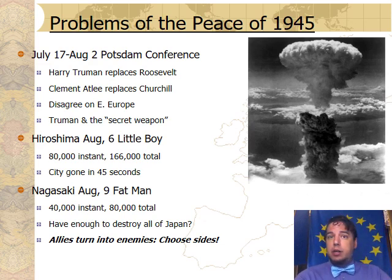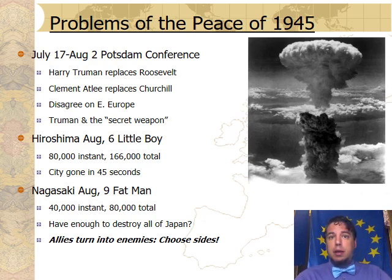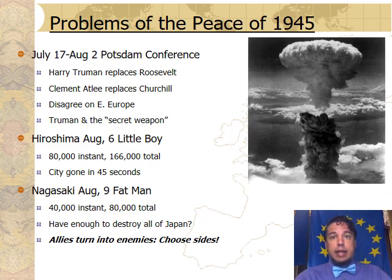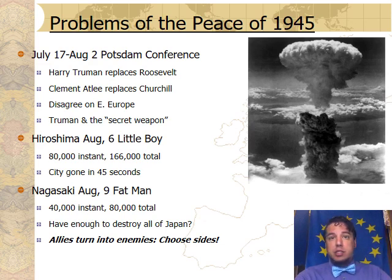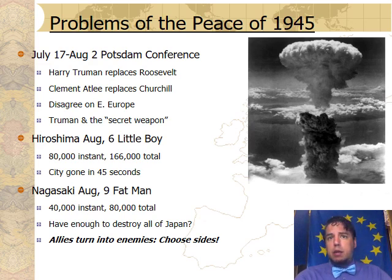What Stalin did in return was instead of accepting free democratic elections in Poland, he propped up a communist dictatorship there in Poland, and then expanded communist dictatorships over the next couple of years in most nations throughout Eastern Europe, essentially creating a huge buffer zone to protect the Soviet Union from any future invasions from the West.